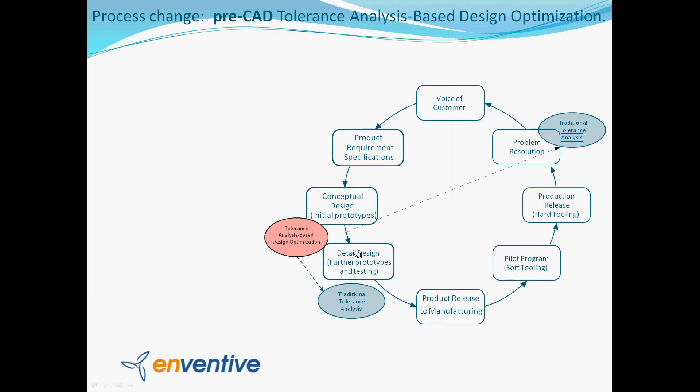In this phase, it allows you to quickly build a functional drawing of the different components, associate tolerance information to those functional drawings, then build a kinematic and physical model of the product that includes all the physics — all the forces, frictions, contact conditions, and thermal effects.